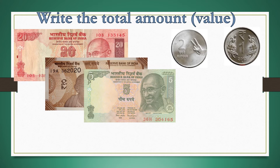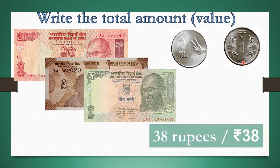Let us solve some more examples for better understanding. Here we see currency notes and coins: a 20 rupees note, 10 rupees note, 5 rupees note, 2 rupees coin, and 1 rupee coin. So, 20 plus 10 is 30; 30 plus 5 is 35; 35 plus 2 is 37; 37 plus 1 is 38. The total amount is 38 rupees.